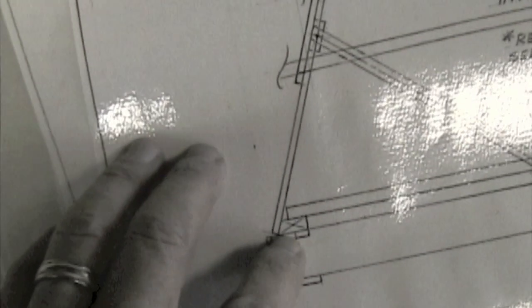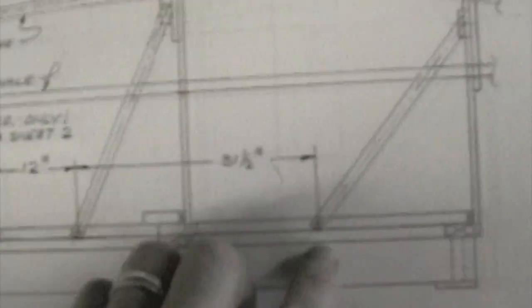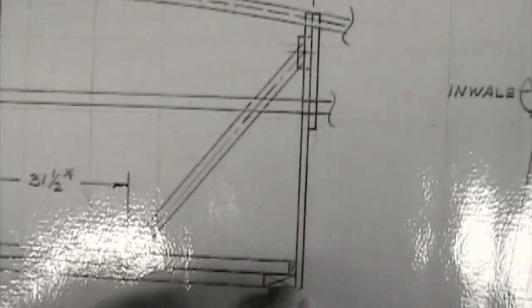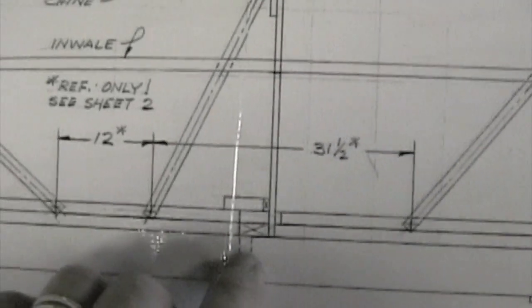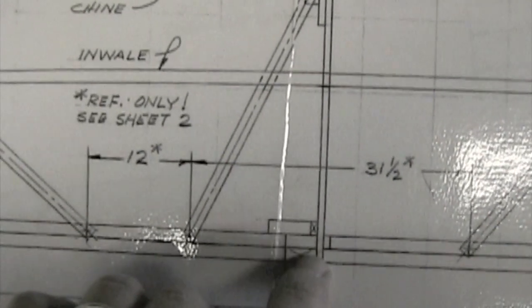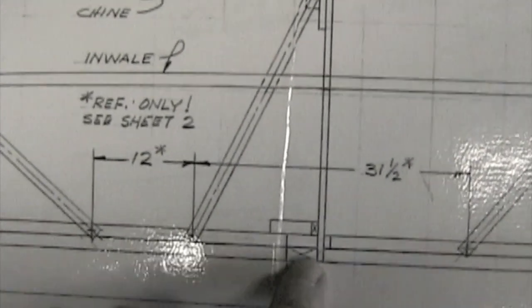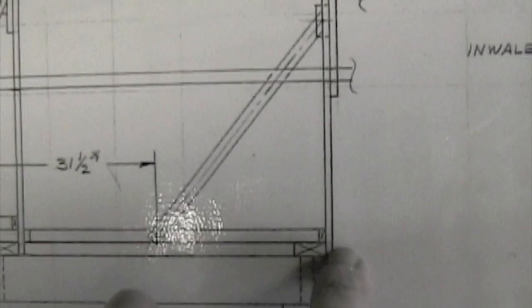If you look, the strong back has got a 2x4 sitting right here that this is attached to at the bottom, and the transom - the measurement to the bottom of the cleat is right there on top of that 2x4. But the center 2x4, the measurement is actually the thickness of a 2x4 up off this actual line.